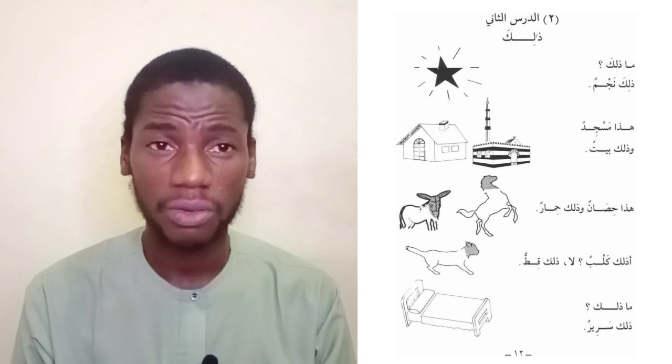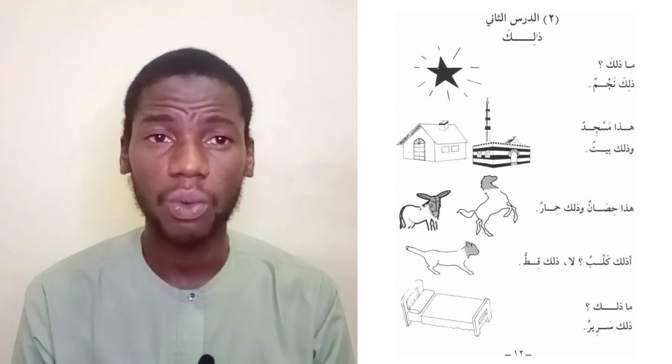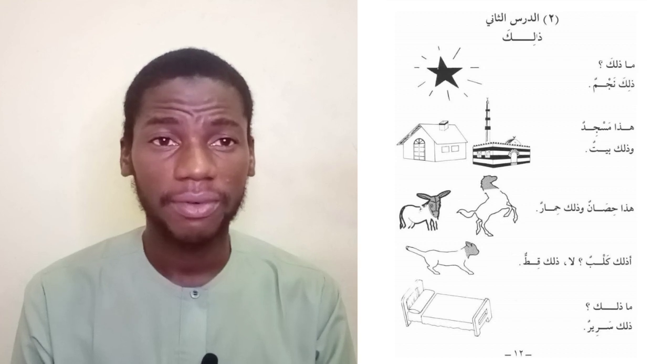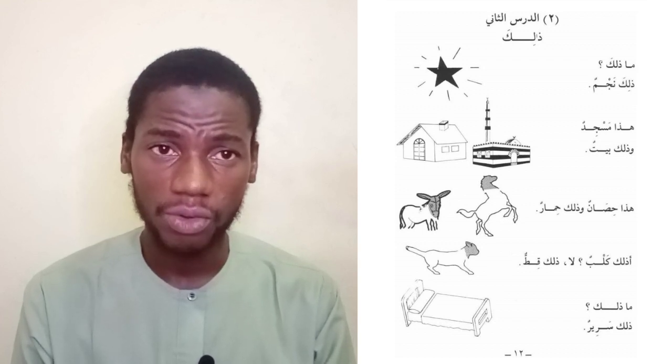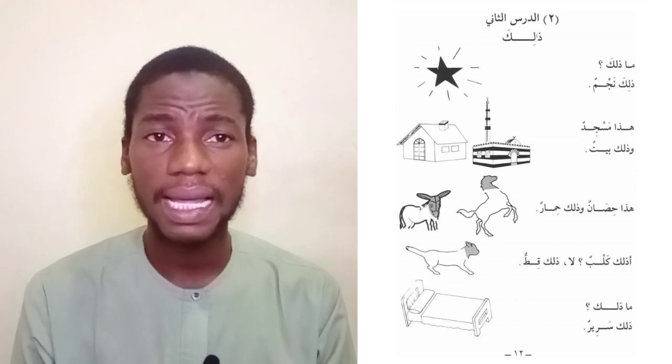Therefore 'zalika' is used for a singular masculine noun that is far. So we have 'ma zalika' — 'ma' is one of the interrogative words in Arabic. When you say 'ma' it means 'what', so 'ma zalika' means 'what is that'.